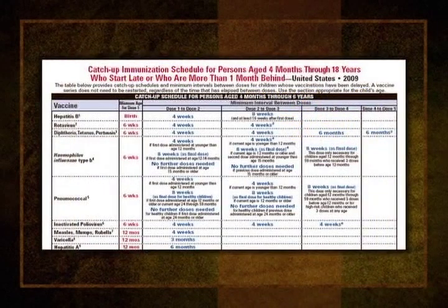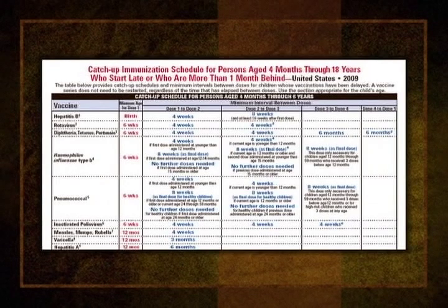The lower half of both schedules contain footnotes. The footnotes provide important details about the schedule, such as minimal intervals and ages. You should always read the footnotes carefully, and you should read the footnotes on each new edition of the schedules because footnote content changes often. Another helpful feature of the child and adolescent schedule is the catch-up immunization schedules, which will help you accelerate the schedule for children who start late or who are more than one month behind.